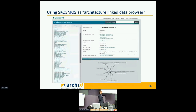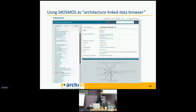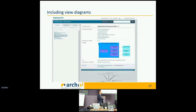Once the data is in the triple store, it can be queried as any linked data. You can browse it with a linked data browser such as Cosmos, which is an open-source tool you can install on a server — it creates a website, you connect it to the triple store, and you can browse your data. You can just click on an object and get its data, and you can even have nice diagrams, because an architectural view is also just an element in your architecture. We built a small extension on top of Cosmos to include those diagrams.